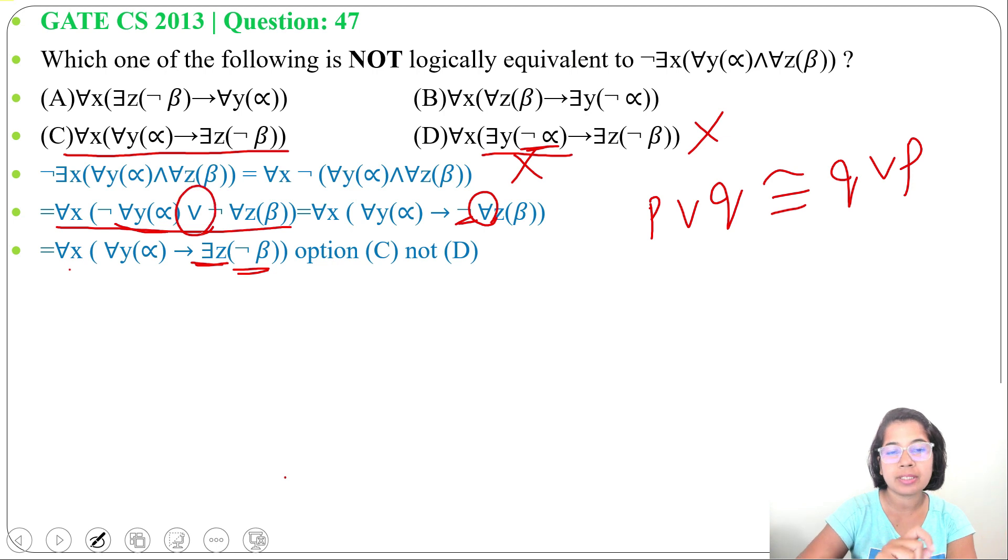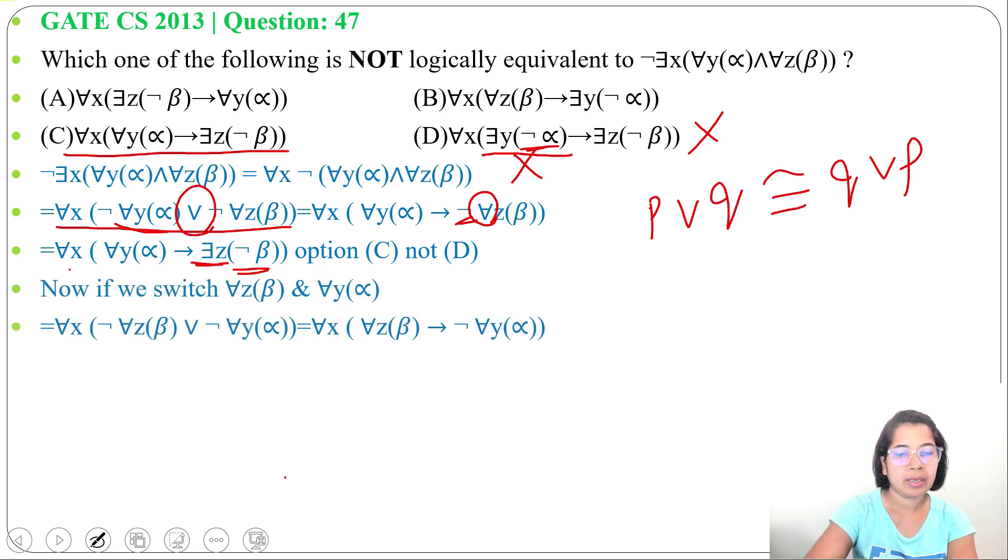As here OR symbol is there, so after switch we will get for all X, then negation of for all Z, beta or negation of for all Y, alpha.